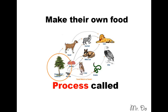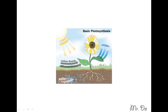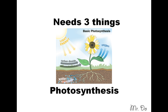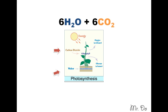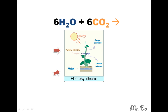When they make their own food, they use a process called Photosynthesis. In Photosynthesis, it needs three things: sunlight, carbon dioxide, and water.